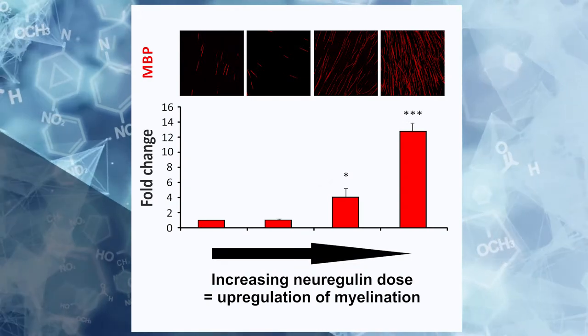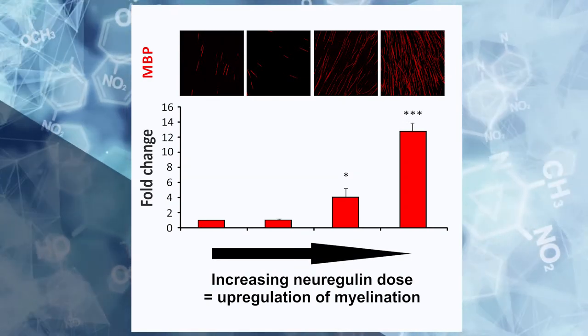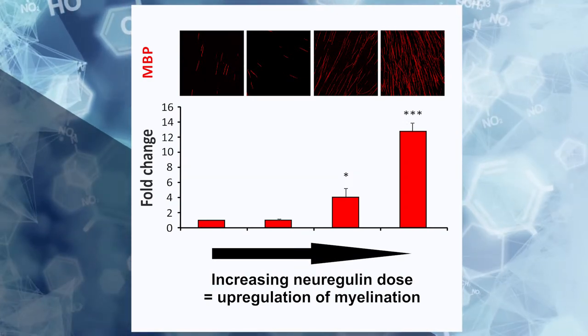So this confirms that this vital pathway is active in our myelinating co-cultures. So we've shown that we can successfully model the interactions between a human sensory neuron and a Schwann cell in vitro. So the next step is to investigate a pathological scenario that impacts on the functioning of these two cell types.